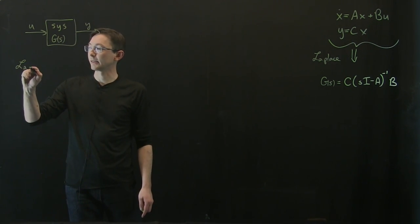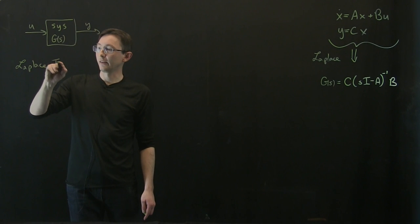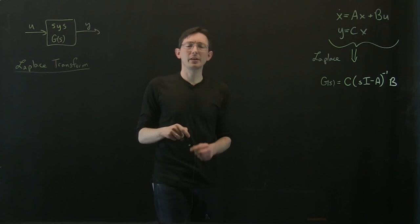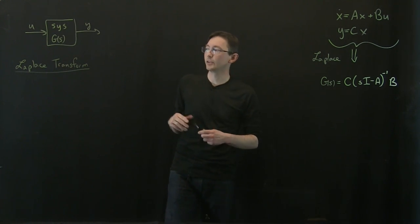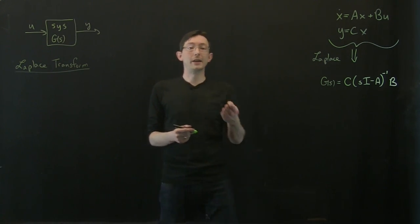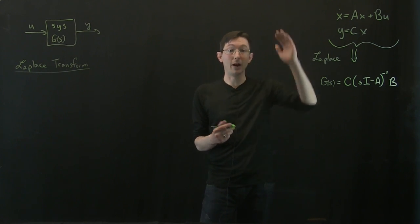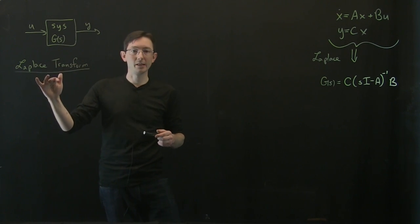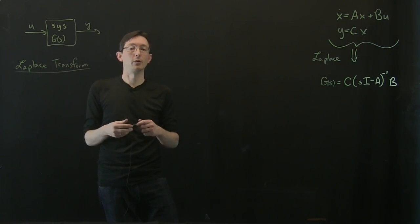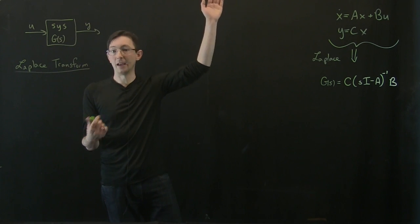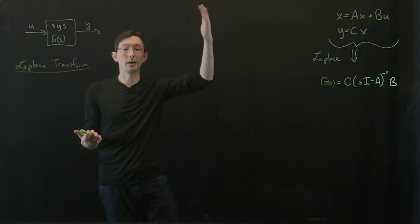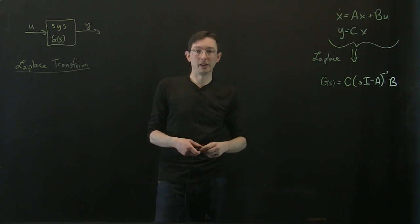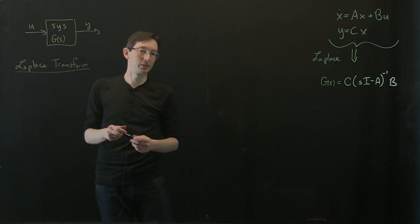The Laplace transform is really just a generalized Fourier transform that's valid for functions that might grow exponentially — functions that might not be bounded at plus and minus infinity. So it's a generalized one-sided Fourier transform. If I have a function that blows up, I can't Fourier transform it, but what I would do instead is multiply it by a sufficiently damped exponential and then Fourier transform it. That's kind of what the Laplace transform is.